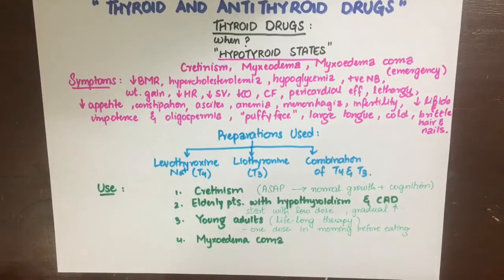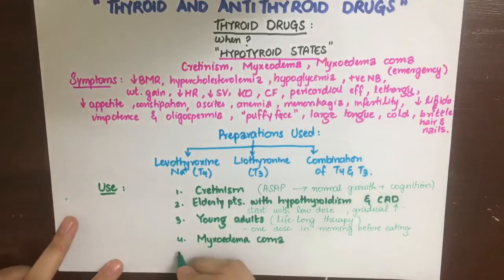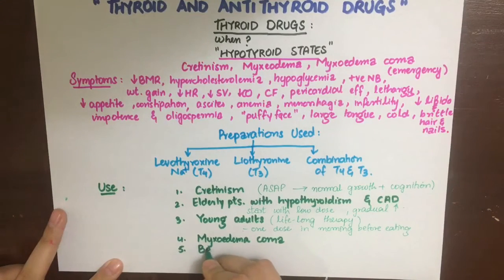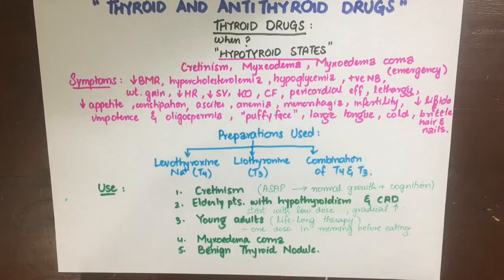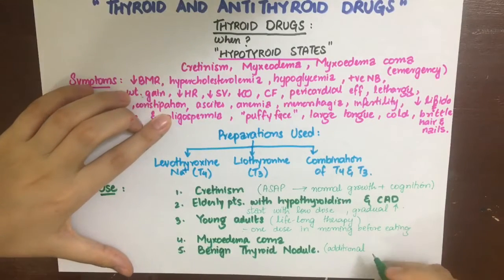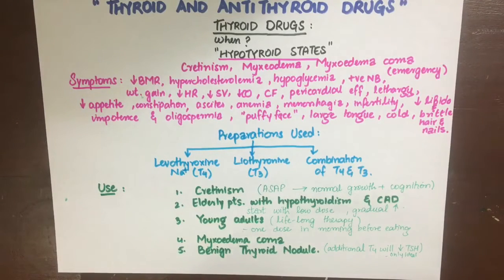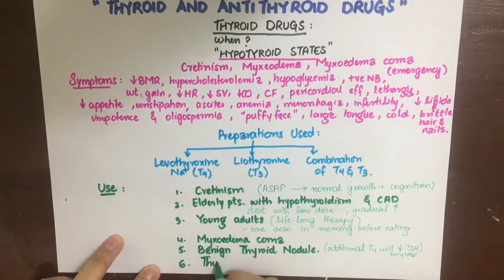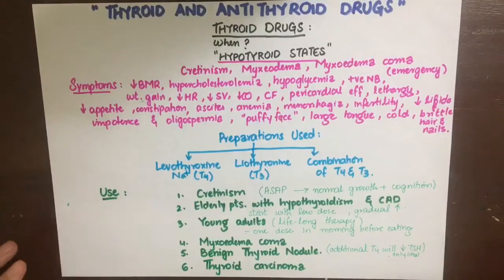The doctor should start therapy on clinical diagnosis and should not wait for T3, T4, and TSH results. General management includes giving levothyroxine or liothyronine IV, intravenous hydrocortisone, rewarming, electrolyte balance correction, and ventilatory support. Thyroxine is also given in benign thyroid nodules — basically adenomas or overgrowths of normal thyroid tissue — the idea being that additional thyroxine will inhibit TSH and thus prevent further stimulation of thyroxine release, though this is only theoretical and used in some cases. Thyroid hormone suppression therapy can also be used in thyroid cancers to suppress TSH and prevent stimulation of tumor growth.